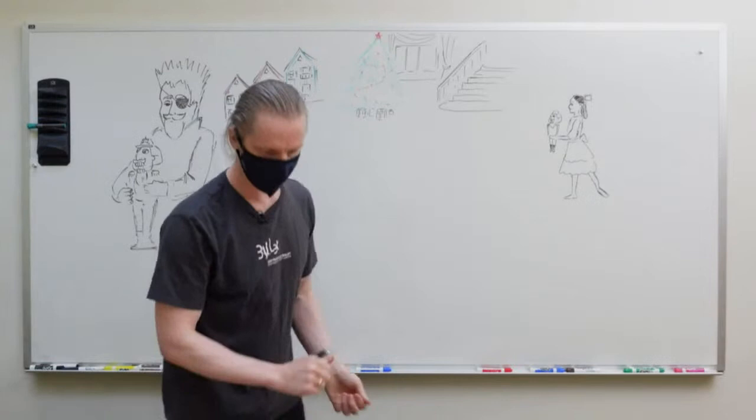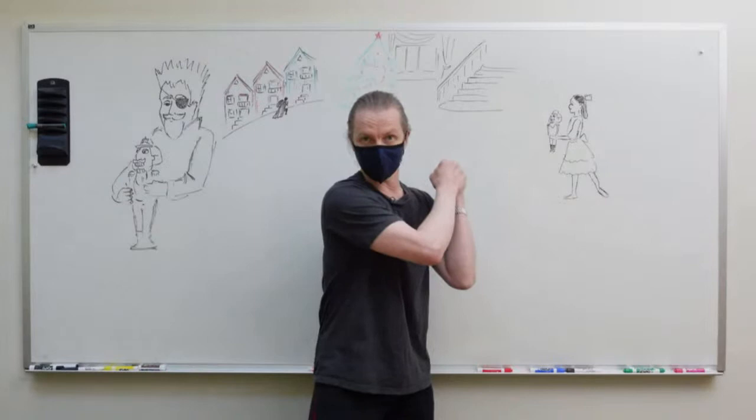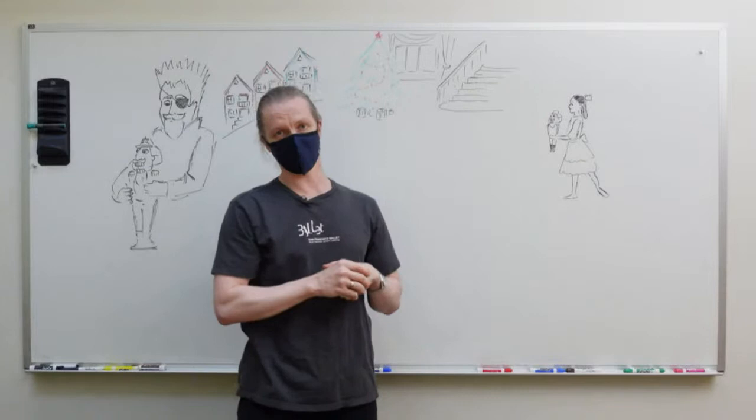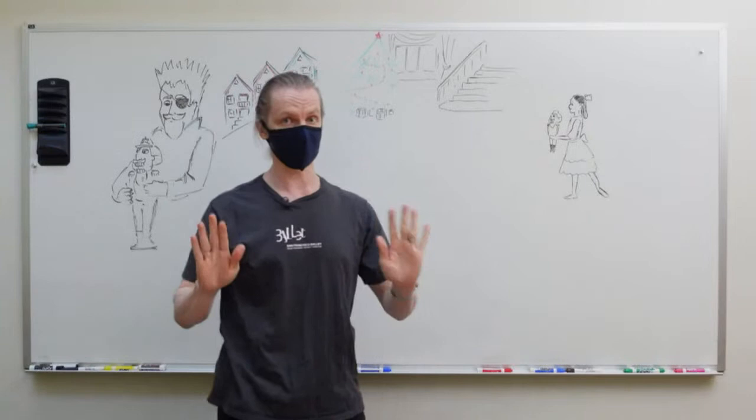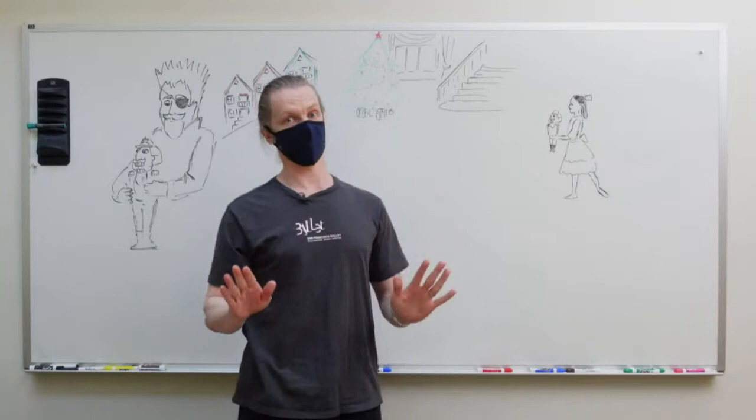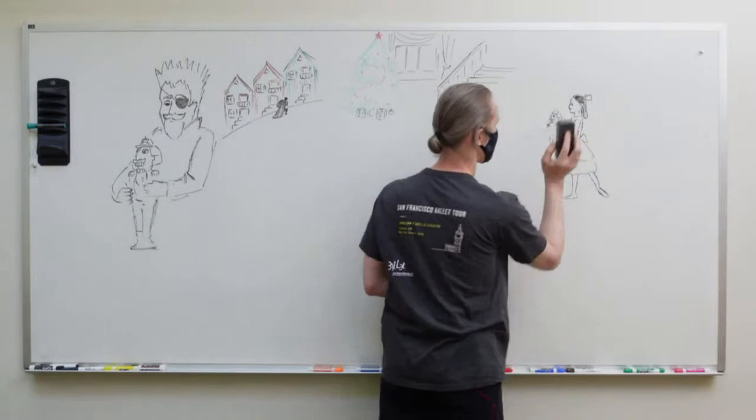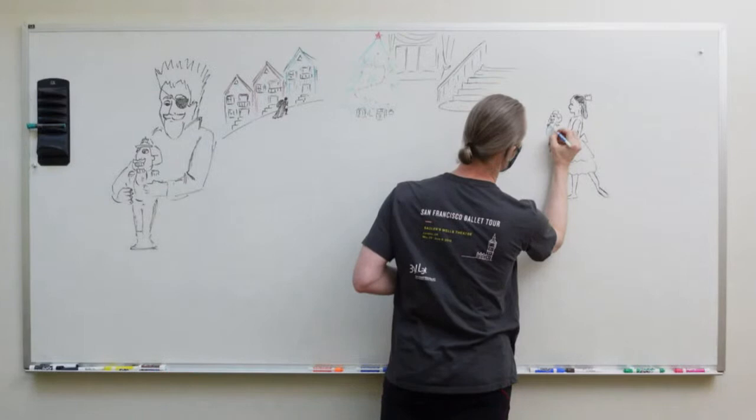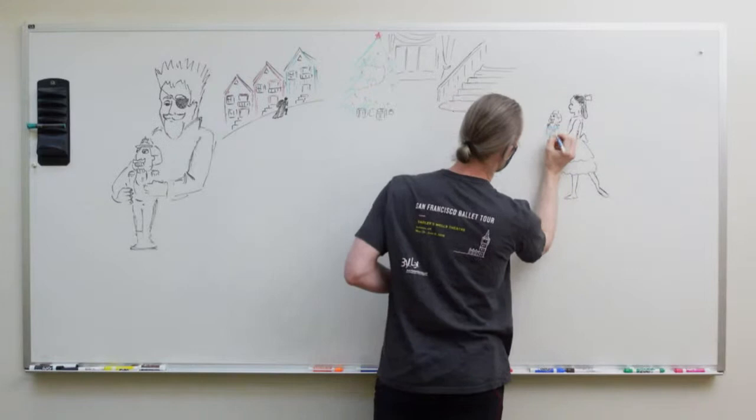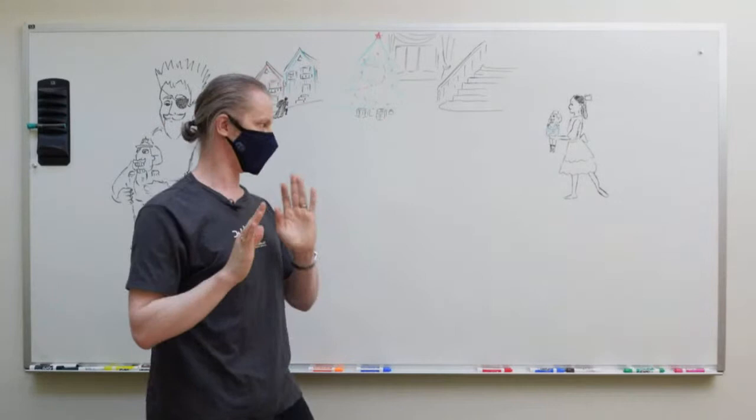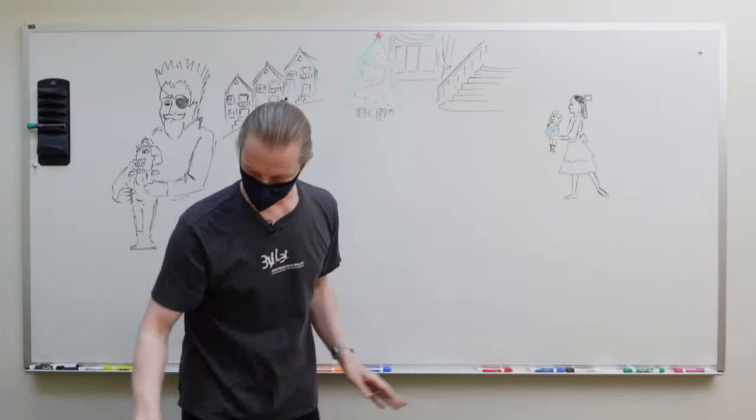Clara is excited to dance with the nutcracker doll, but her brother Fritz gets a little jealous. He grabs the nutcracker doll out of her hand and because he was so violent with it, he actually breaks it. Clara is extremely upset. Uncle Drosselmeier sees that and says, 'Clara, please do not worry. I know exactly what to do. He just needs some time to heal.'